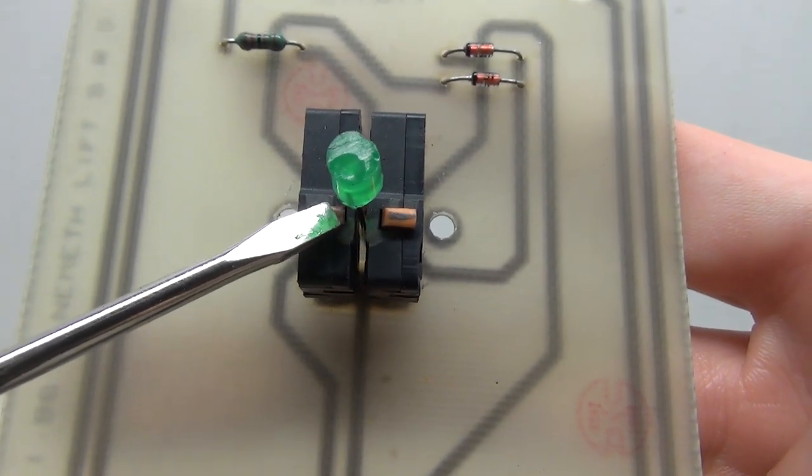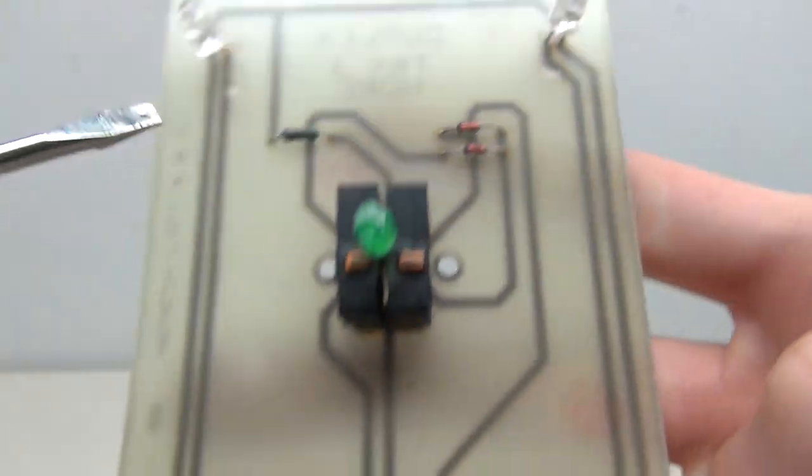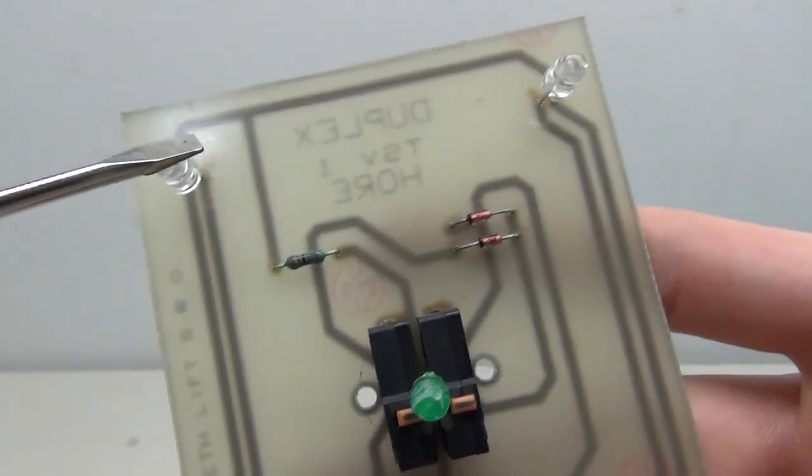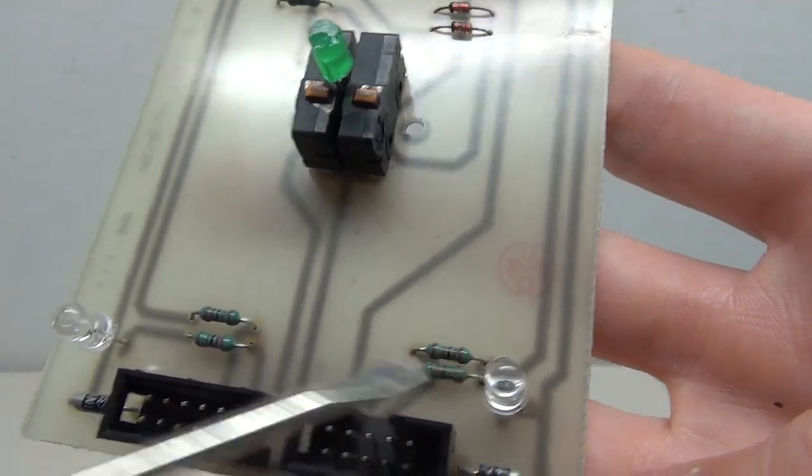Here we have the two little micro switches that the button pushes down on and up here we've got a resistor. We've got a couple diodes. Some more resistors down here and then we've got our four little red LEDs for the little lights around.